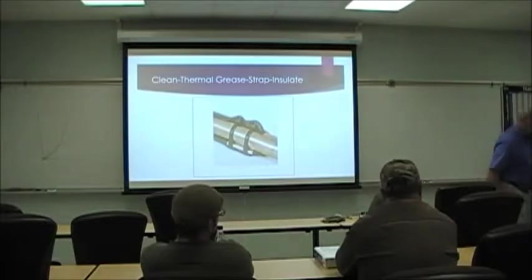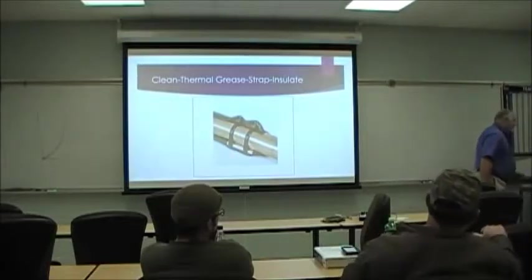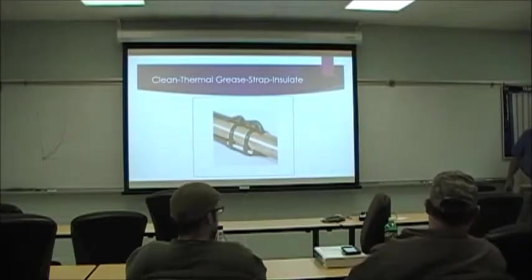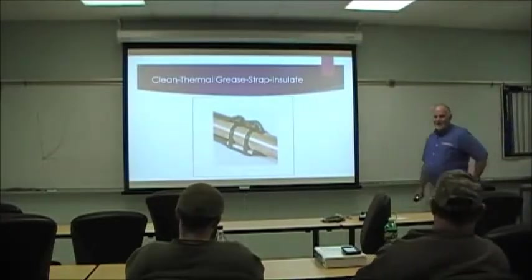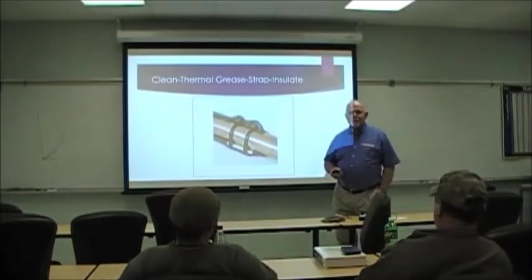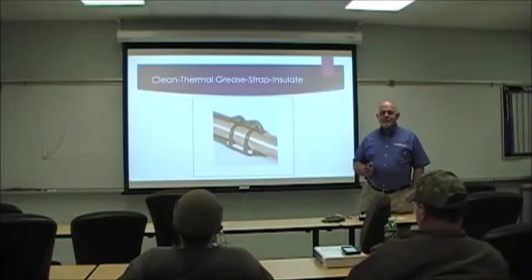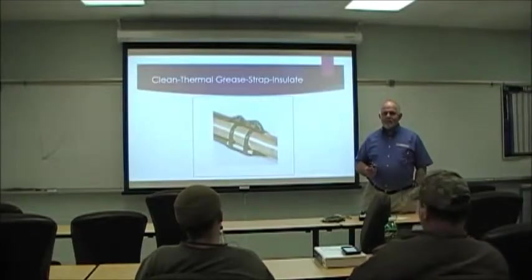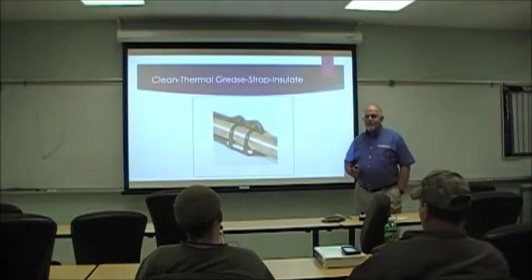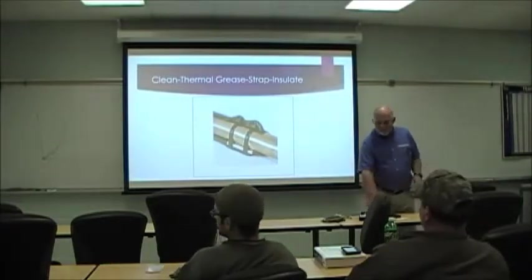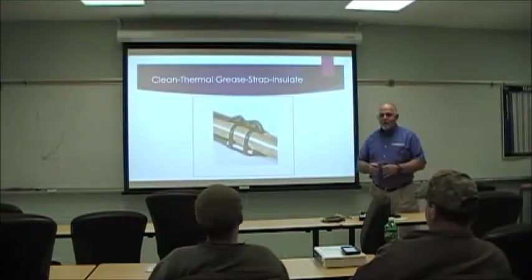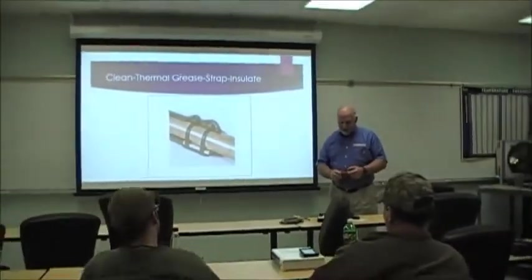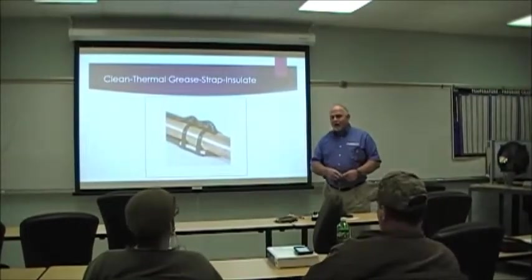Mount it traditionally like you do a regular expansion valve bulb — in the 4 or 8 o'clock position. When making electrical connections, use 3M scotch locks — UR2s or whatever UR connector you're using — because they make the connection and provide a seal. Probably the number one problem with these after they've been installed is: you open the bottom of the case and see wire nuts with tape on them; they get corroded and it changes the resistance of the sensor so it doesn't read right. So you've got to use these connectors. They cost a little more, but you've got to do it.